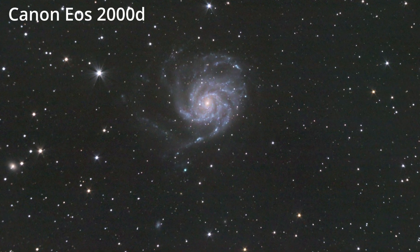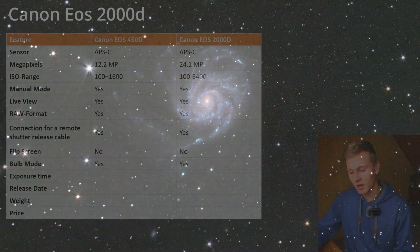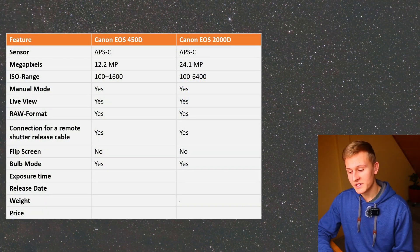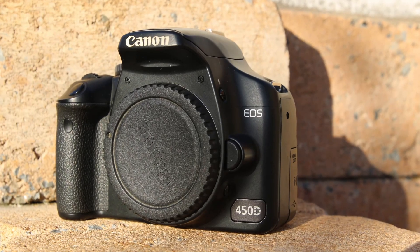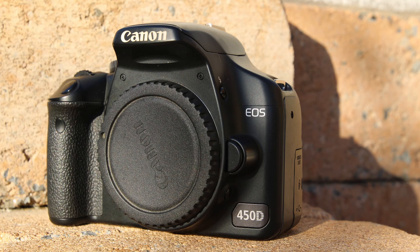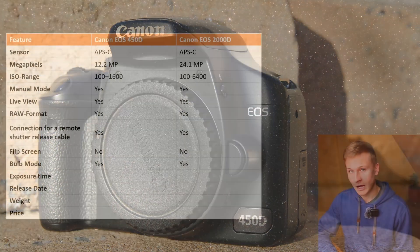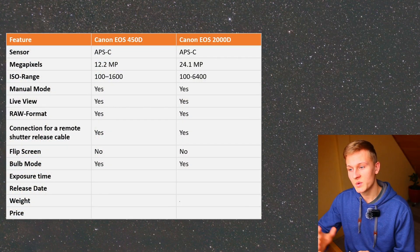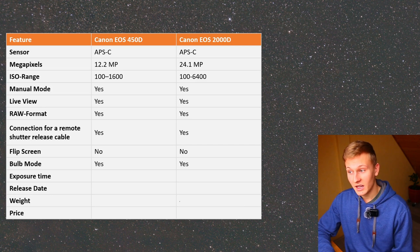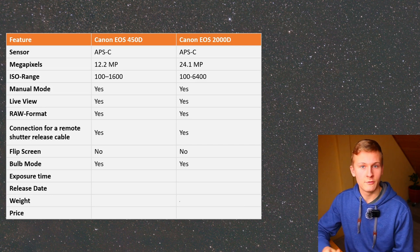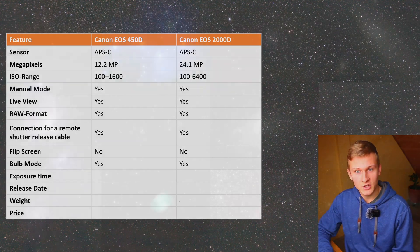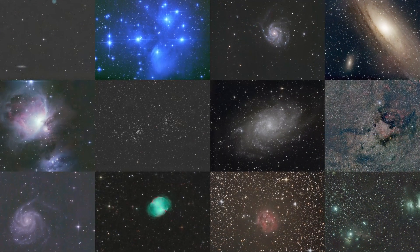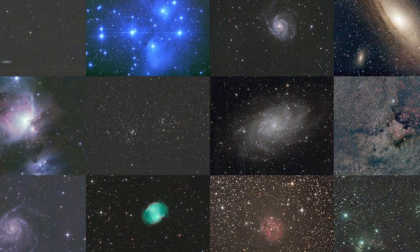The next aspect is bulb mode, which means you can capture exposure times longer than 30 seconds. In deep sky astrophotography, 30 seconds is not that long — sometimes you capture images up to five minutes. Therefore bulb mode is very important for astrophotography. If you're not sure which features are important for a DSLR camera, I've already made a video about important and necessary camera features for DSLR cameras in deep sky astrophotography, which I'll link right there.